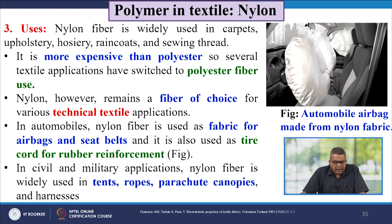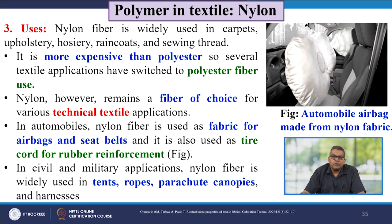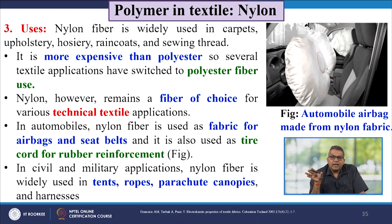Nylon fibre is widely used in carpets, upholstery, hosiery, raincoats, and sewing threads. It is more expensive than polyester, so several textile applications have switched to polyester. However, nylon remains the fibre of choice for various technical textile applications. In automobiles, nylon fibre is used as fabric for airbags and seatbelts and as tyre cord for rubber reinforcement. In civil and military applications, nylon is widely used in tents, ropes, parachute canopies, and harnesses.